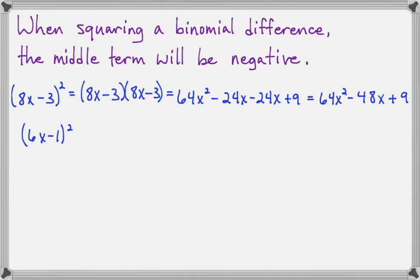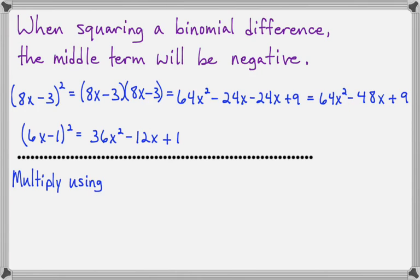Now let's use our shortcut on this example: 6x minus 1 squared. First times first will give us 36x to the second. The middle term will be 6 times negative 1 times 2. So negative 6 times 2 will be negative 12x. And last times last will make positive 1.